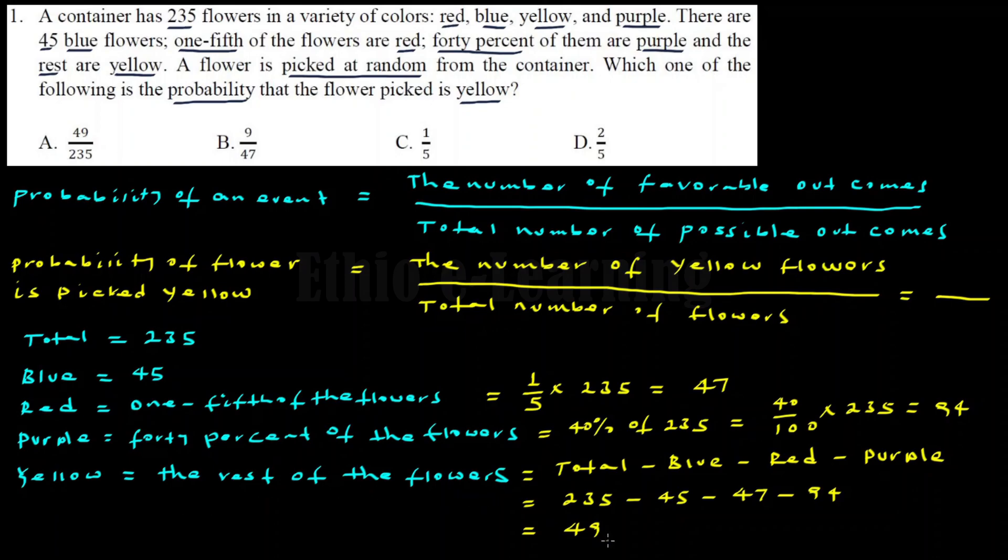The probability that the flower picked is yellow: yellow flowers in the container is 47, total number of flowers in the container is 235. So the probability is 47 over 235.